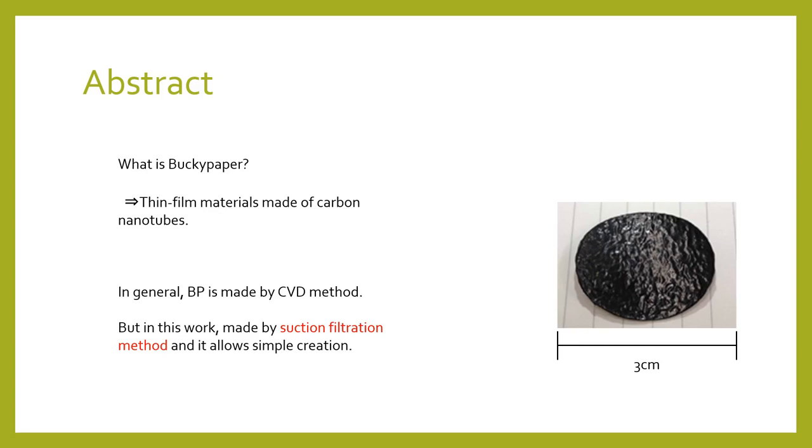Buckypaper is a thin film made from CNT. CNT has a shape like rounded one layer of graphite into a tubular shape. This cylinder is called single-wall CNT for one layer and multi-wall CNT for multi-layer. And this time, multi-wall CNT was used because it's inexpensive.